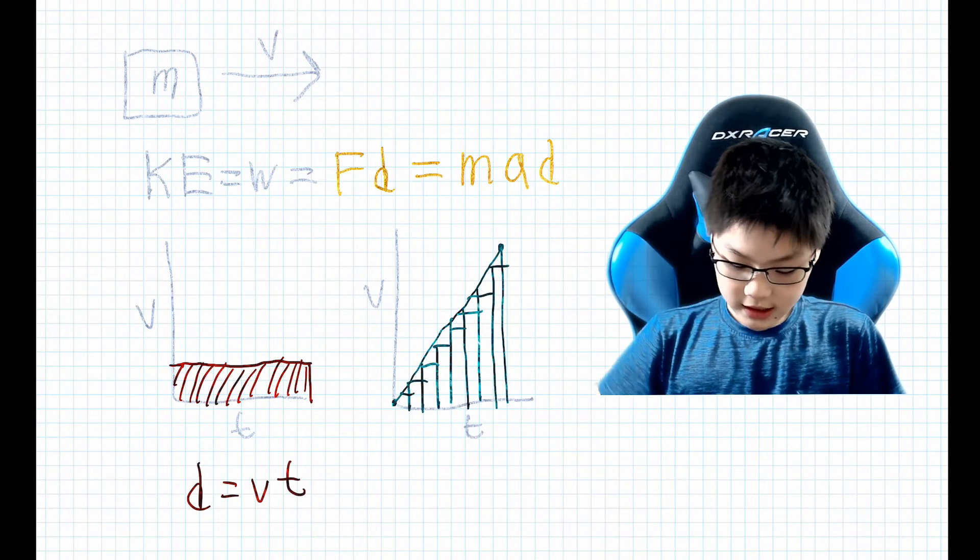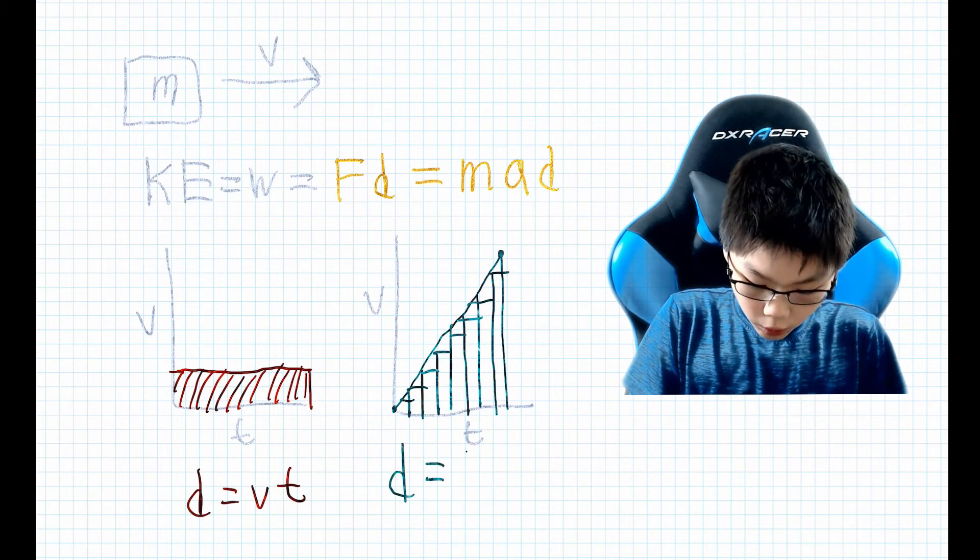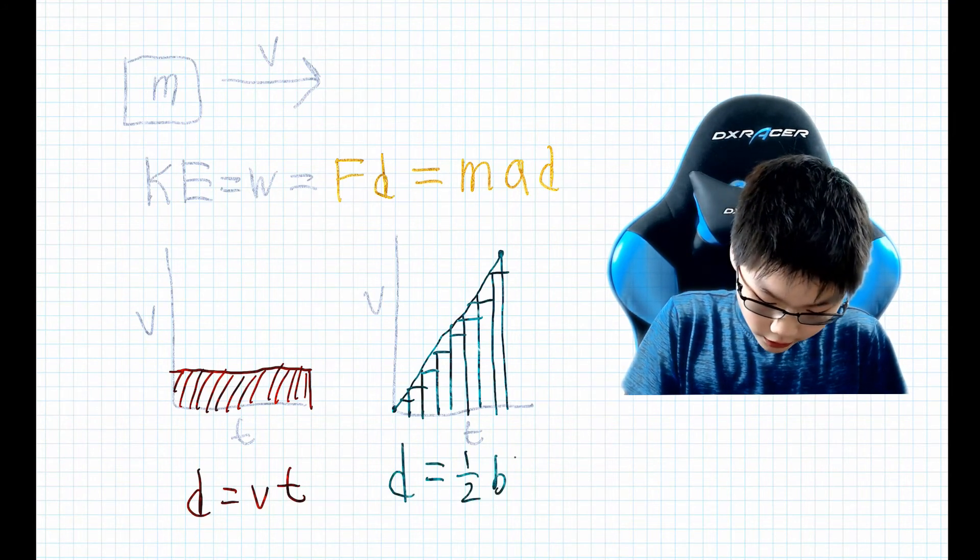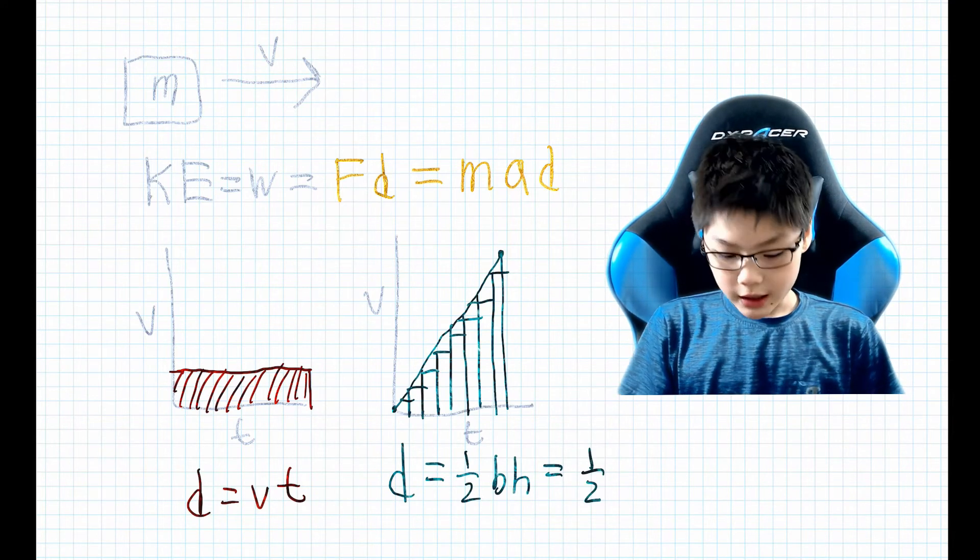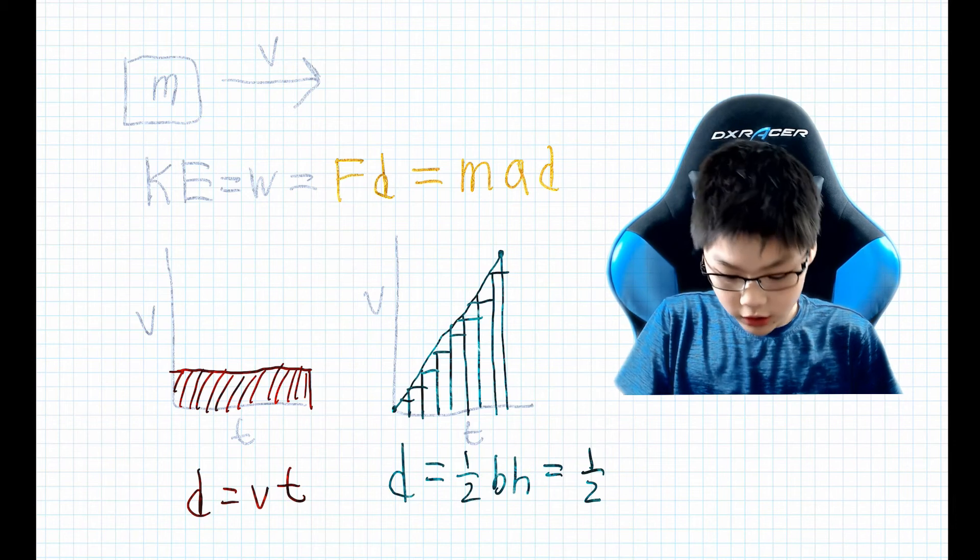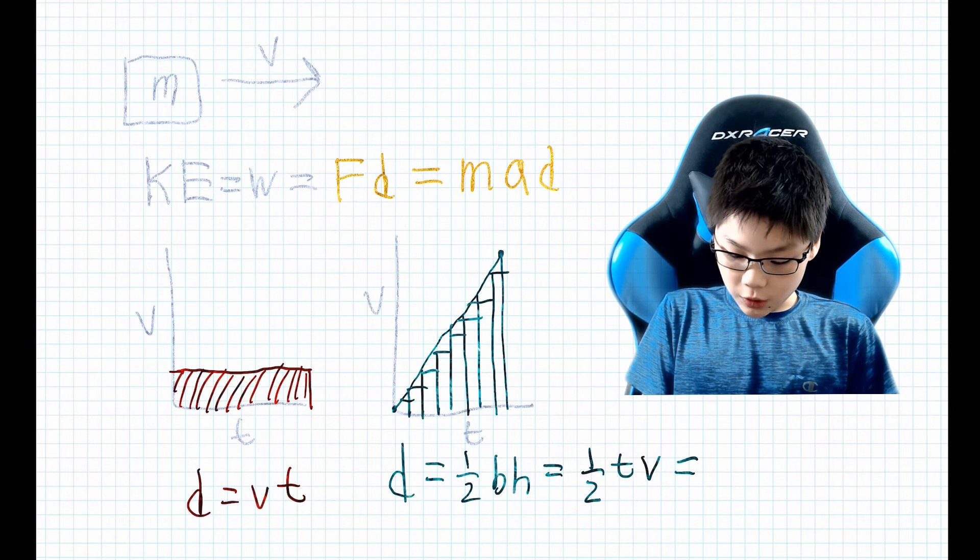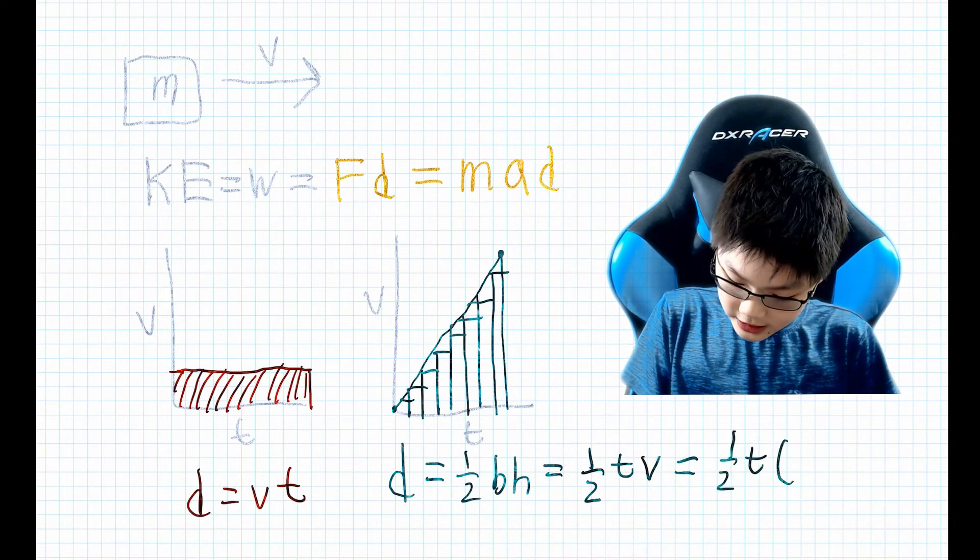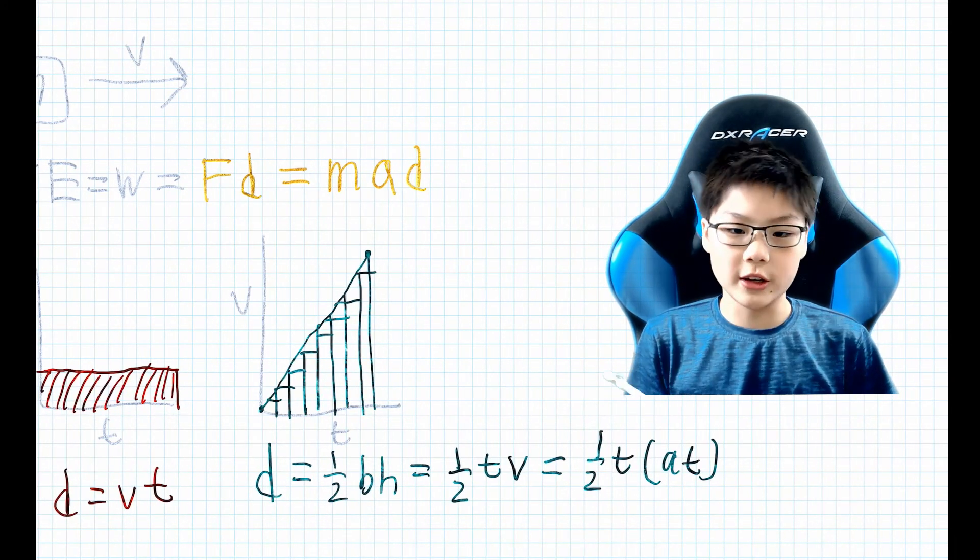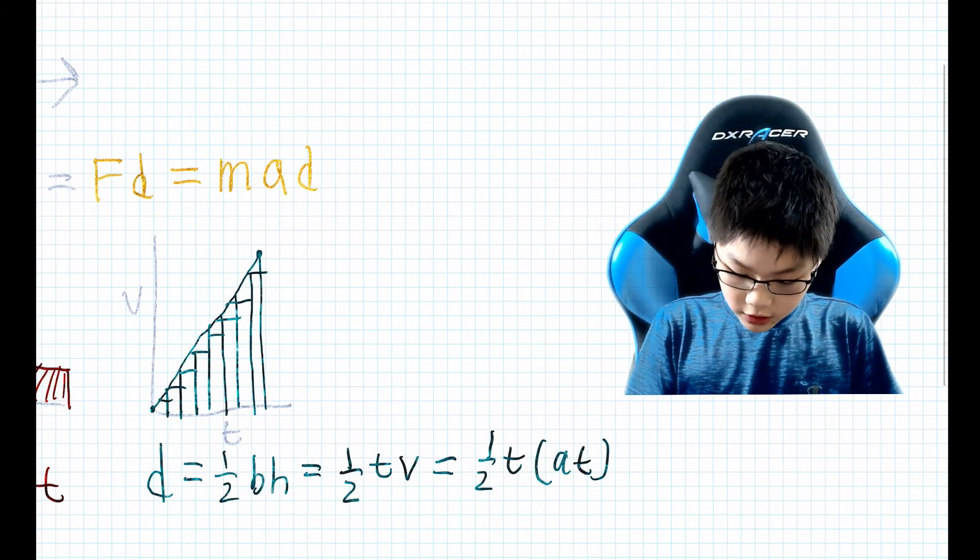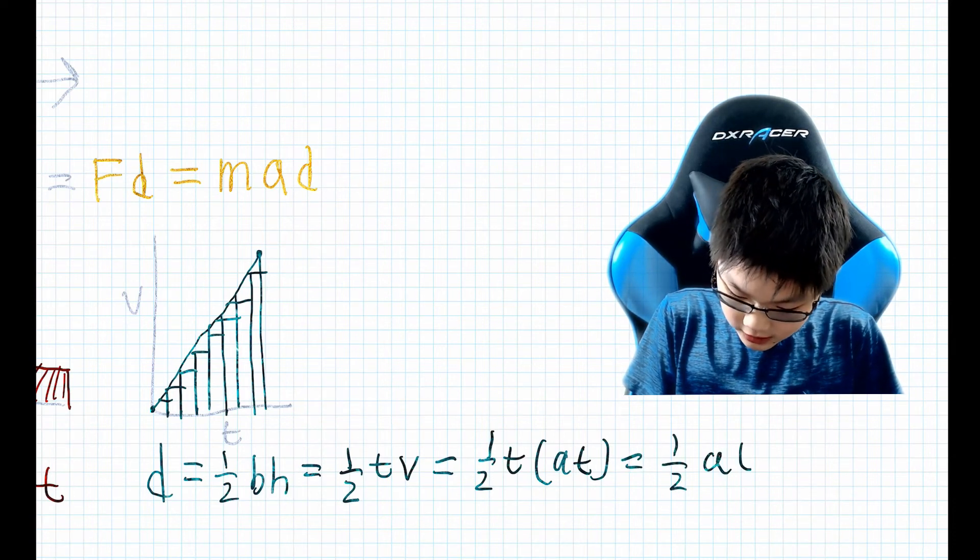But we'll notice that this is also a triangle. So the distance will be equal to the one half base times height formula. That will give us one half - the base is the time, and the height is the velocity. So that will give us one half time times velocity, which equals one half t times at. The velocity is equal to the acceleration times the time, so that will give us one half at squared.